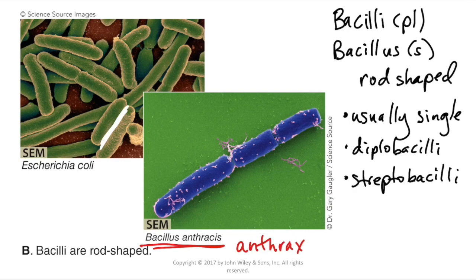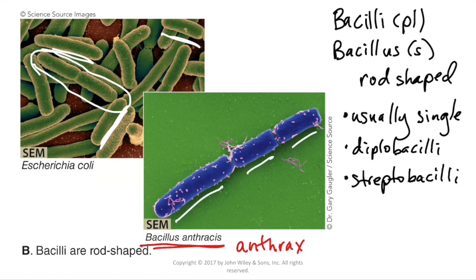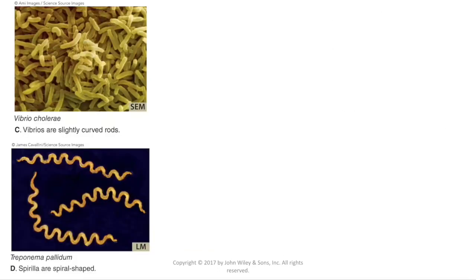Looking at our E. coli, they're mostly just single bacteria. We do have a few like this one that looks like a diplobacillus — this is actually just a bacterium that hasn't completely finished dividing; once it does it will pop off into two. Over with Bacillus anthracis we actually have one, two, three bacteria linked together, so this one is a streptobacillus.